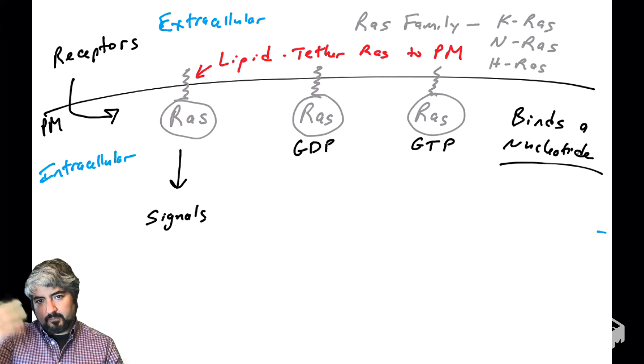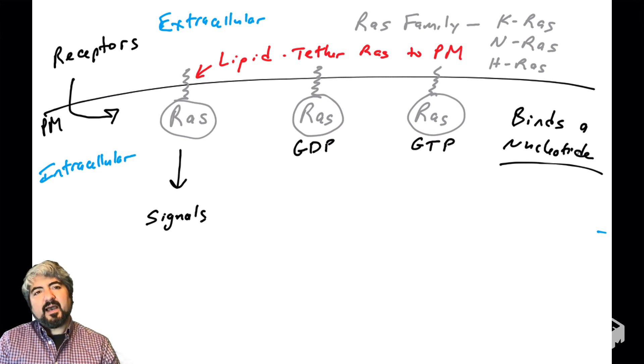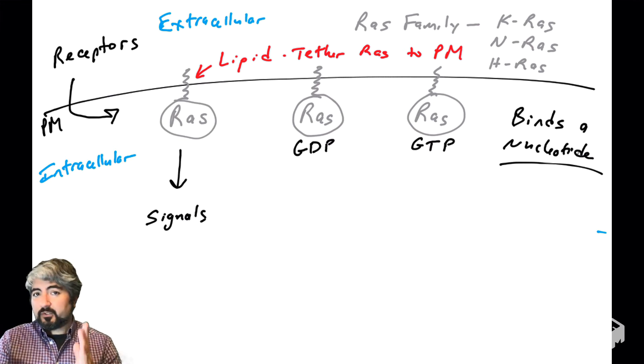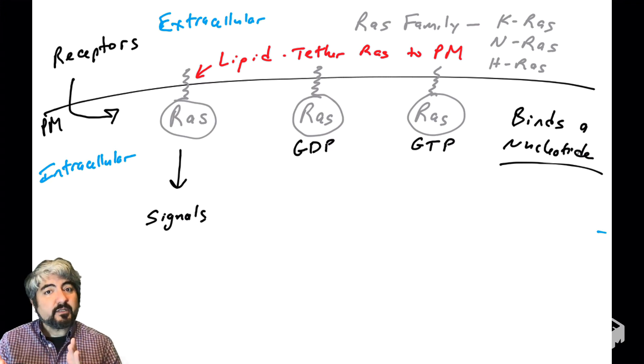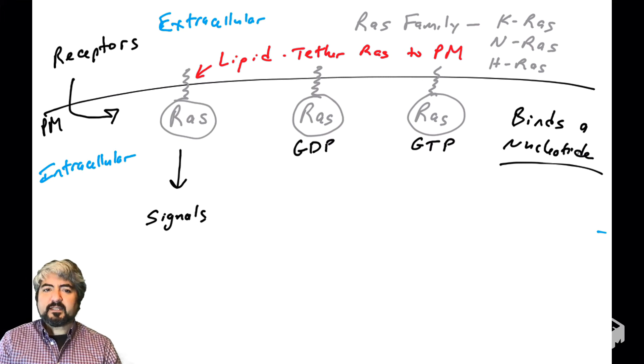The other thing to know about RAS is it binds nucleotides. You know what a nucleotide is—they make up DNA, they make up RNA, ATP is a nucleotide. We've got two nucleotides here: GDP and GTP.